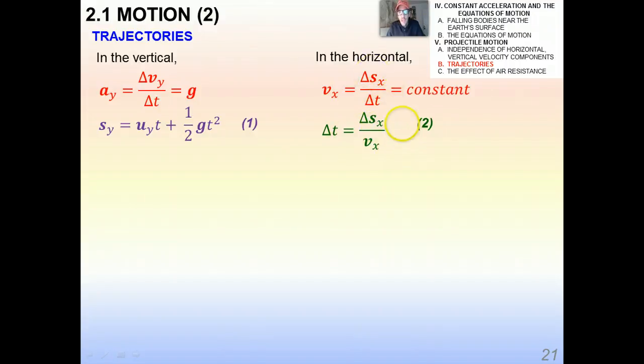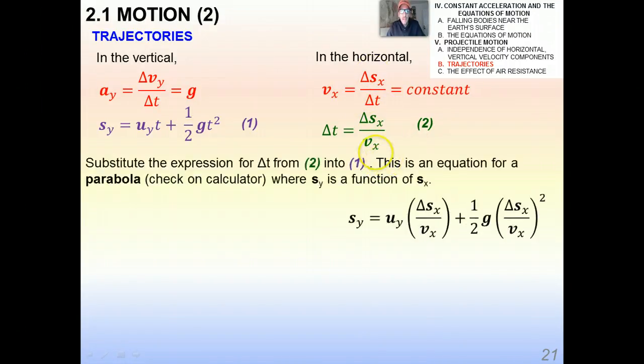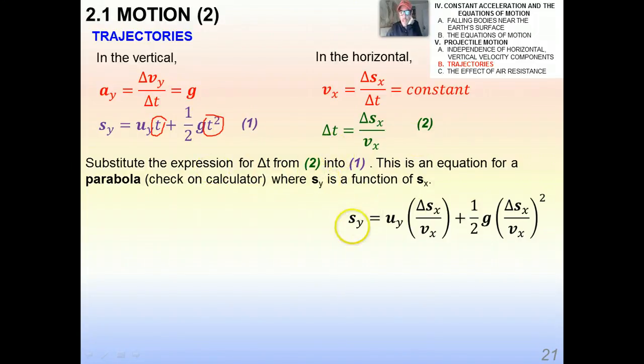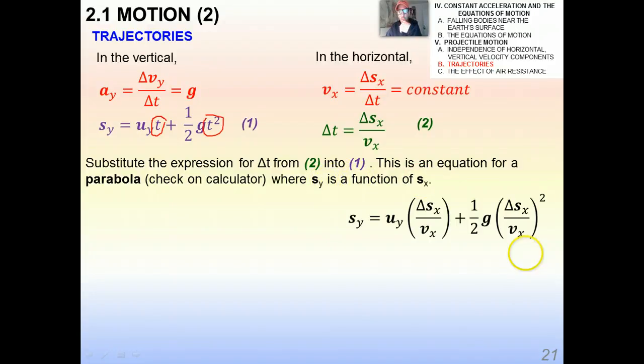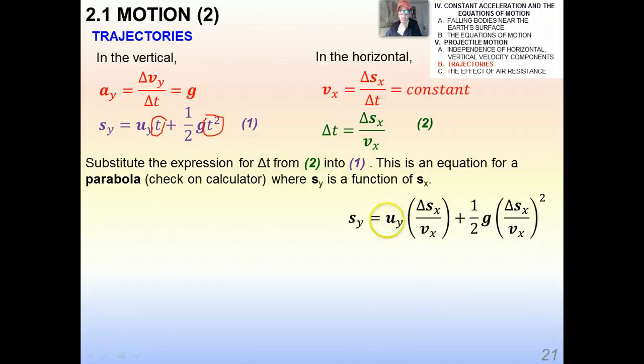I rearrange this equation, and I get the green equation here I'm calling number two. So what I'm going to do is take t from equation two and put it into equation one, right here and right here. And then it turns out being a parabola, and what's interesting is that s_y is actually a function of s_x. In other words, the vertical displacement is now a function of the horizontal displacement. Remember, u_y, v_x, g, those are all constants, so you end up with a quadratic equation.